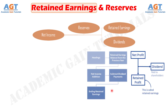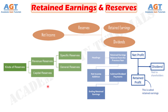Retained earnings imply a part of a company's net earnings that are set aside and not paid as a dividend, to reinvest in the business or pay off debt. But reserves are that part of the profit which is earmarked to provide for business needs in the future or to fulfill future contingencies and unexpected liabilities.